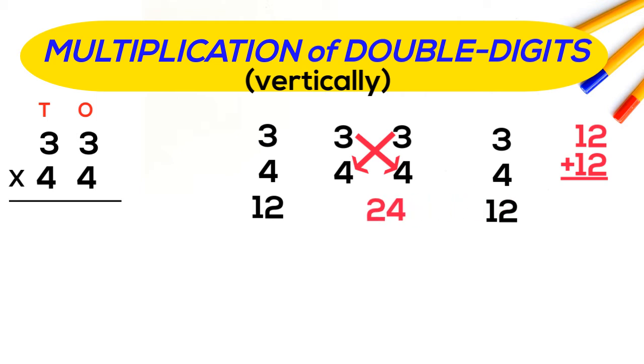So 3 into 4 is 12 that will get added with another 12 and we will write 24 in the middle. Now in the next line, 2 comes down and 1 will get added with 24 and make it 25.